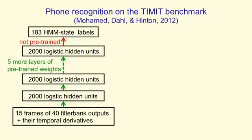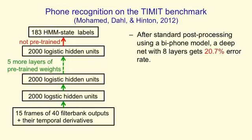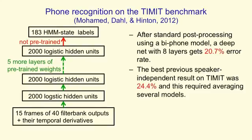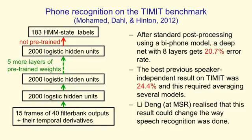Dahl and Mohammed developed a system that uses many layers of binary neurons to take acoustic frames and make bets about the labels. They used a fairly small database with only 183 alternative labels, and used some pre-training to get their system to work well — which will be described in the second half of the course. After standard post-processing, they got a 20.7% error rate on a very standard benchmark, kind of like the MNIST for speech. The best previous result on that benchmark for speaker-independent recognition was 24.4%, and a very experienced speech researcher at Microsoft Research realised that this was a big enough improvement that it would probably change the way speech recognition systems were done — and indeed it has.